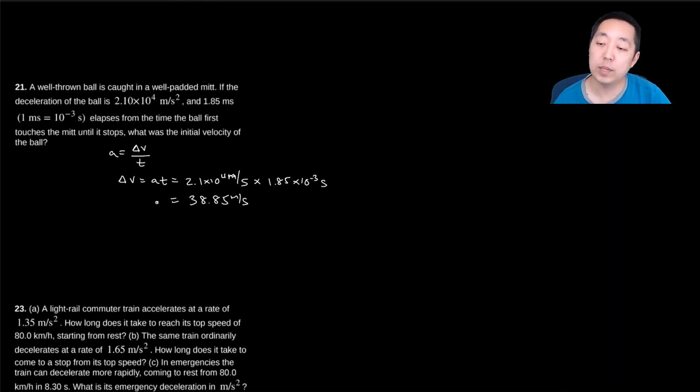And because it ended at rest, this is what must have been the initial velocity. Because if the change was 38.85 and one of them was at rest, that's what it initially started at and decelerated to.